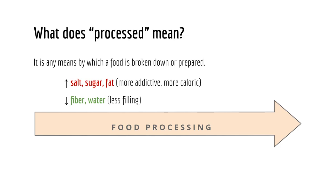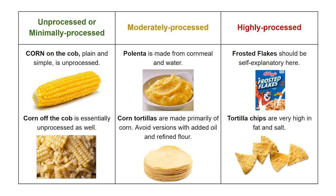What does processed really mean? It is any means by which a food is broken down or prepared. Typically we add salt, sugar, and fat — making the food more addictive, more caloric, and more delicious — while at the same time reducing fiber and water, making the food less filling and easier to overeat. Plain old corn is an unprocessed, whole plant-based food. Highly processed means frosted flakes and potato chips — those are the foods we want to avoid.